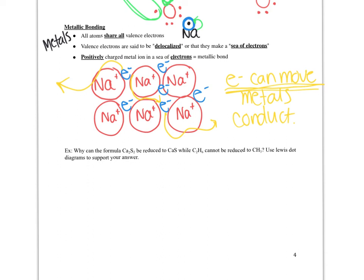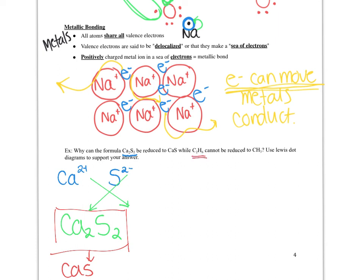So with all of our knowledge now, I'd like you to explore the idea of why can the formula Ca2S2 be reduced to CaS, while C2H6 cannot be reduced to CH3. Use Lewis dot diagrams to support your answer. I just wanted to give a little bit of background before you get started. When we're writing formulas for calcium sulfide, calcium is a 2+ ion, sulfur is a 2-. And if we drop and cross, we get Ca2S2.